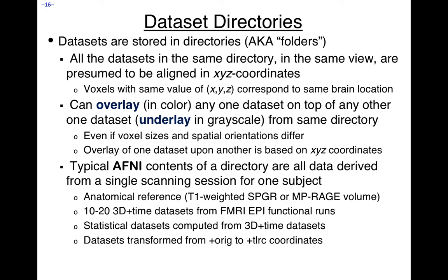Dataset directories: datasets get stored in directories — some people call them folders. All the datasets in the same directory are presumed to be aligned in XYZ coordinates, meaning voxels with the same XYZ value correspond to the same brain location. With that assumption you can overlay in color any one dataset from the directory on top of any other, which appears in grayscale as the underlay. The overlay is based on XYZ coordinates, not voxel correspondence. Typical directory contents are the anatomical reference image, 3D+time datasets from fMRI, statistical datasets computed from those, and datasets transformed to template space for group analysis.